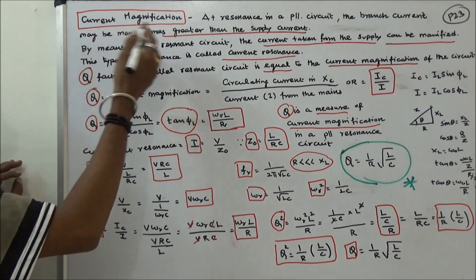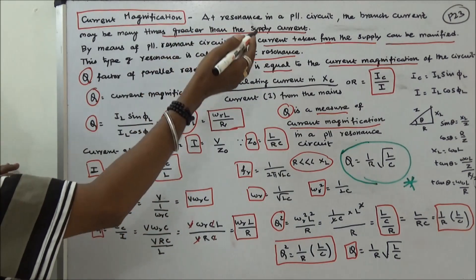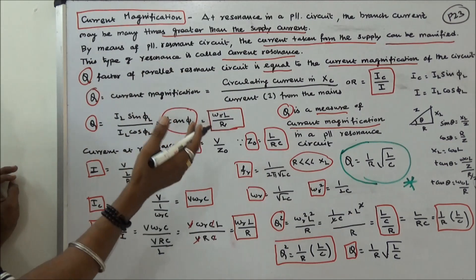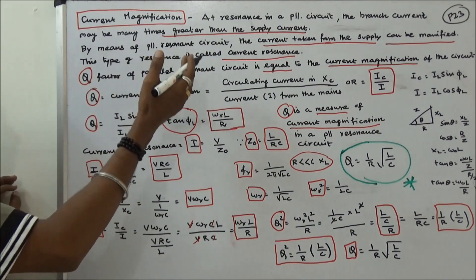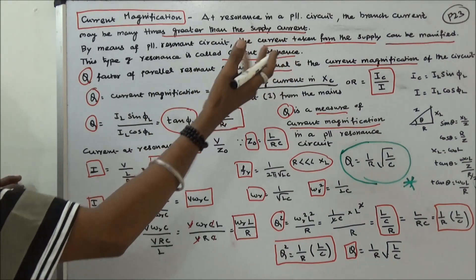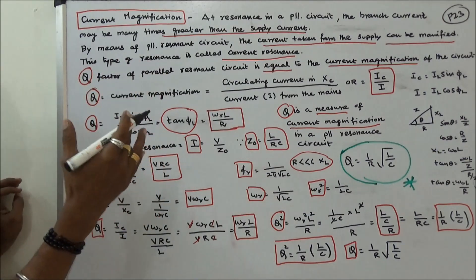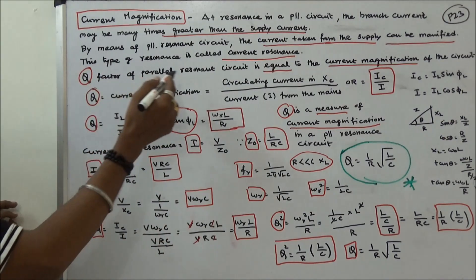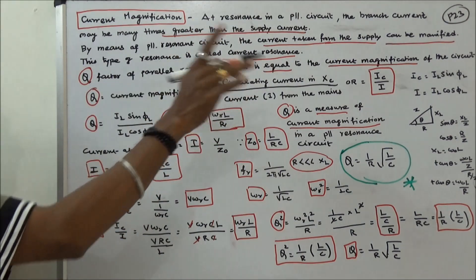This class will discuss current magnification. At resonance in a parallel circuit, the branch currents may be many times greater than the supply current. By means of a parallel resonance circuit, the current taken from the supply can be magnified. This type of resonance is called current resonance. The Q factor of a parallel resonance circuit is equal to the current magnification of the circuit.